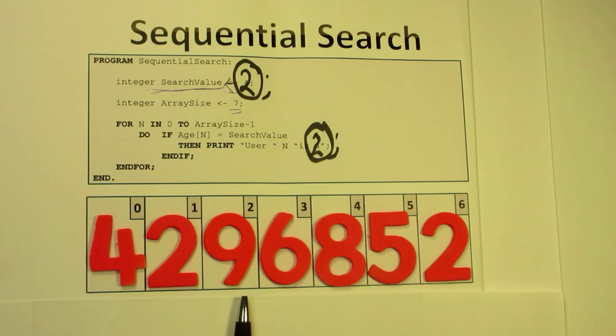The next several locations are not two. Then we reach the last location, location six, the seventh element of the array, which is two. So we'll print out that user one and user six are two.